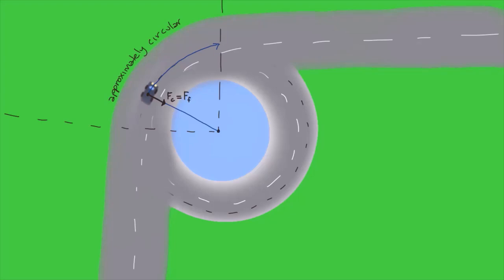We know that the car experiences a centripetal force. So, F_C is equal to the mass times velocity squared divided by the radius. And this centripetal force is provided by friction. So, the centripetal force is equal to the friction force. Therefore, the speed is equal to the square root of the friction force times the radius divided by the mass of the vehicle.